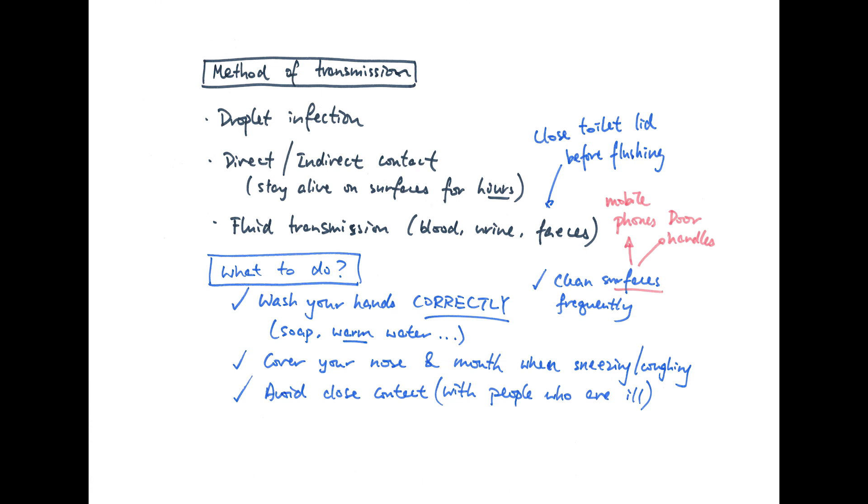So these are the few key ones. Droplet infection, so for sneezing and coughing. Direct and indirect contact, as the virus can stay alive on even dead surfaces for hours.